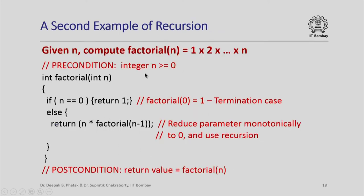Here is another simple example of recursion: given n, compute factorial(n). Here is a simple program with a precondition that n >= 0, a postcondition that the return value is factorial(n), and a recursive implementation. If n is 0, return 1 because factorial(0) is 1 — this is the termination case. Otherwise if n > 0, return n times factorial(n-1), which is just the definition of factorial used directly in the recursive formulation.